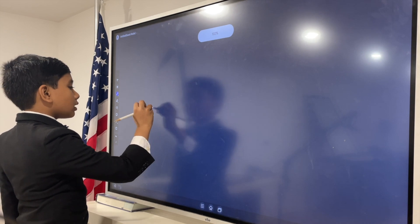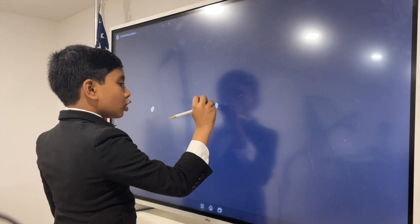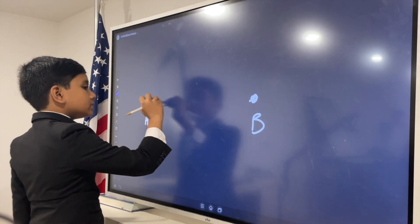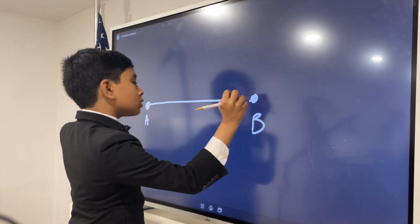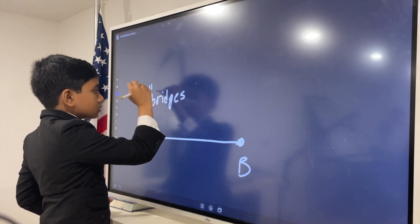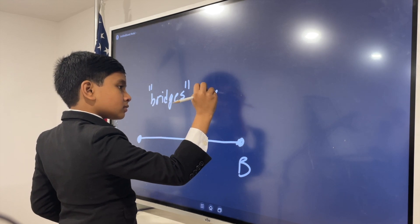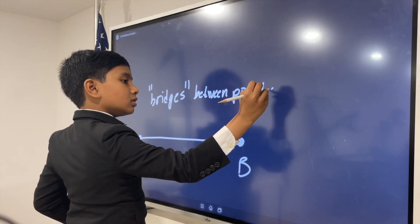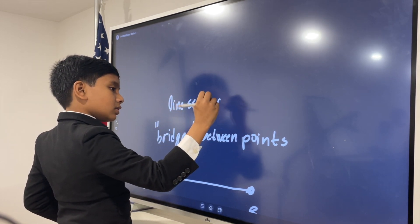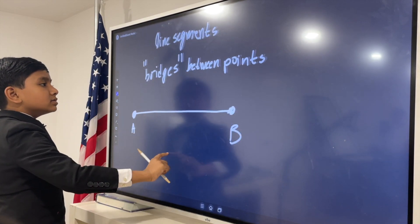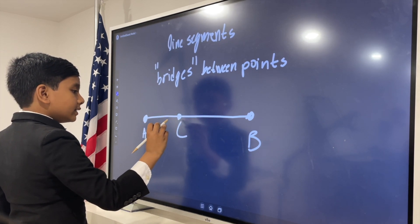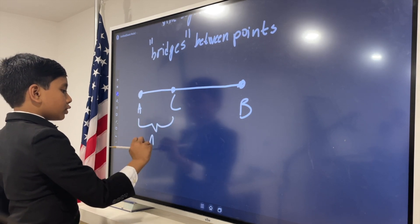So, remember. A line, or like, line segments, are like bridges between points. And, any point that we place somewhere on a line, like C, for example, will divide the line into two parts.